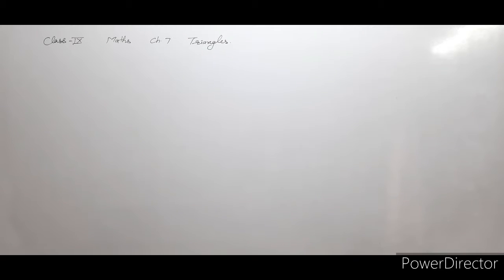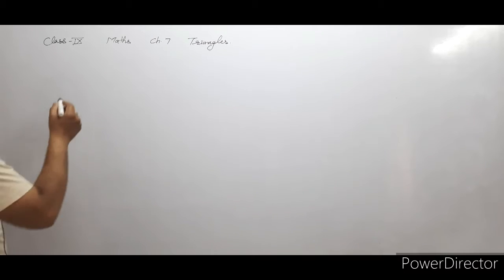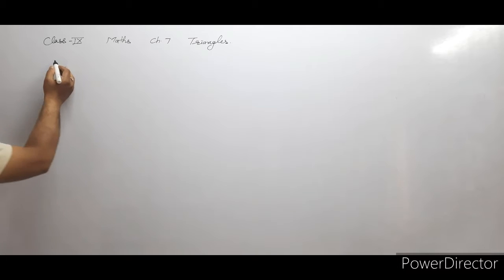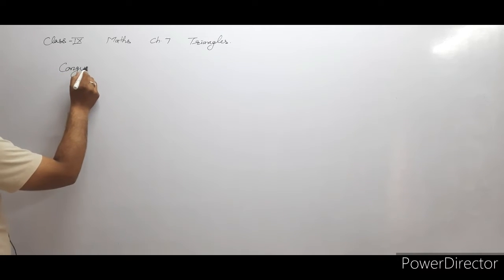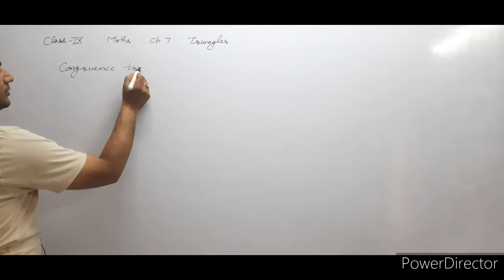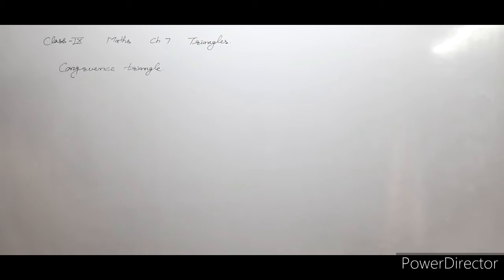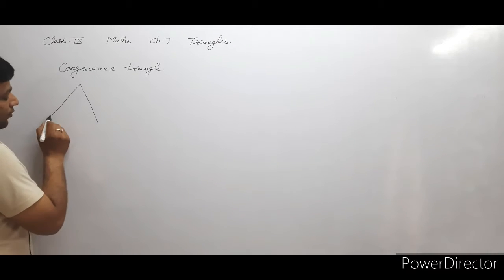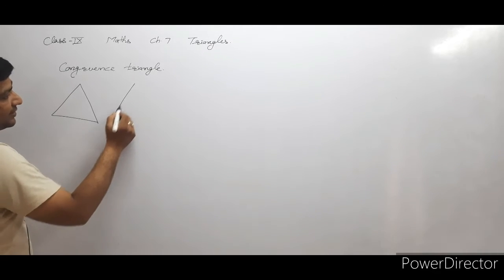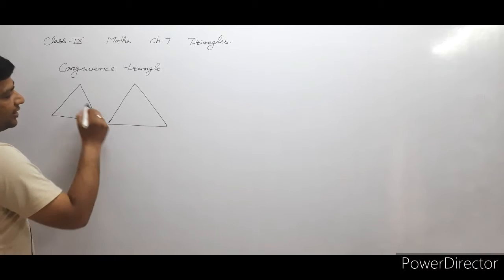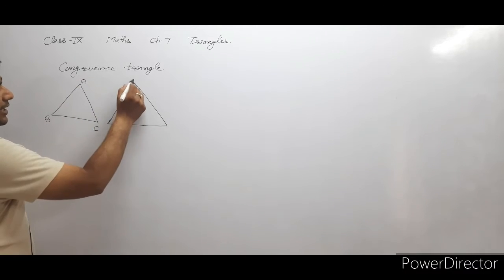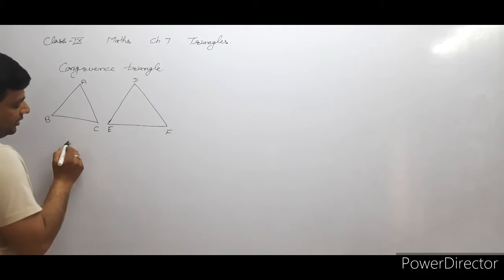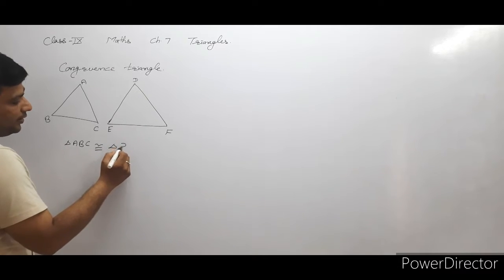Hello students, today we are going to study Class 9 Maths Chapter 7: Triangles. We already studied about the congruency of two triangles — congruent triangles means if two triangles are of the same size and have the same corresponding angles, then they are called congruent triangles. For example, triangle ABC is congruent to triangle DEF.